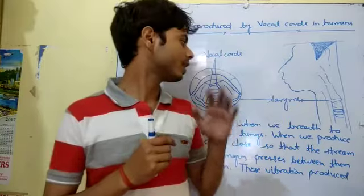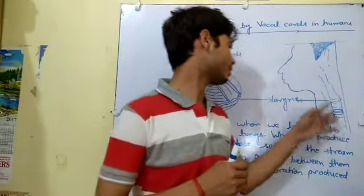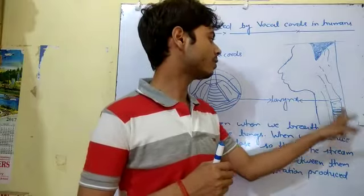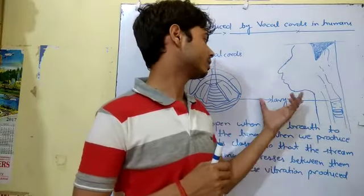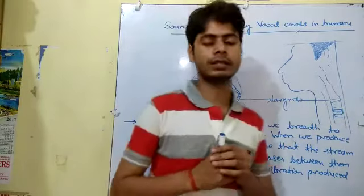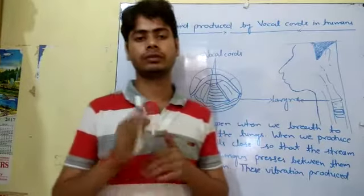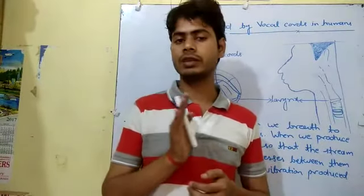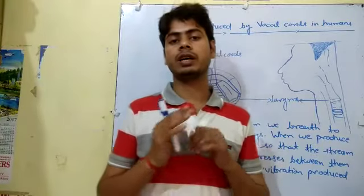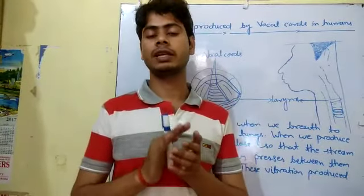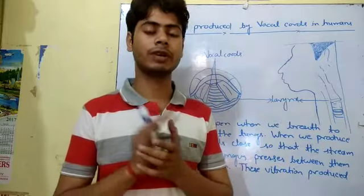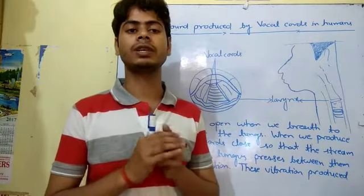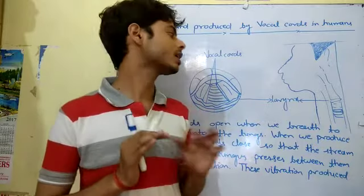We have already drawn a diagram of the larynx. This is the larynx, which is at the top of the windpipe. So to repeat: sound is produced in humans with the help of the larynx, the voice box, which is situated on the top of the windpipe in the neck.